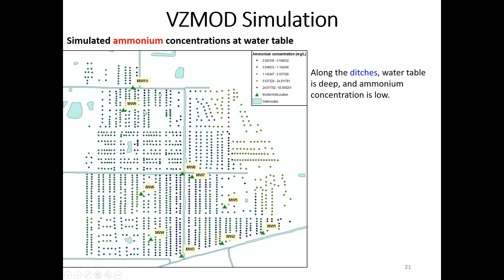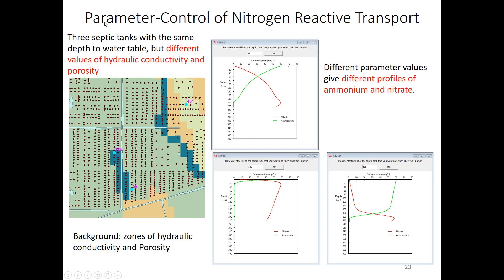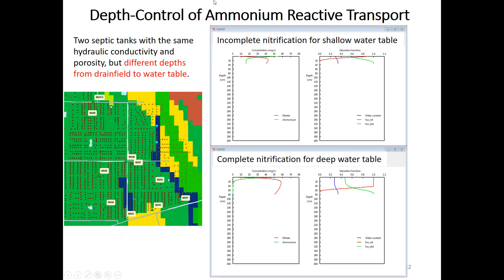Inland, we have high ammonia concentration, possibly because the water table is high and nitrification is not completed. We also examined how depth and soil parameters control ammonium concentration. We hand-picked two septic tanks in the same soil zone but with different depths from drain field to water table — about 40 mm for one and 80 mm for the other.